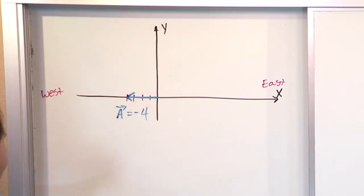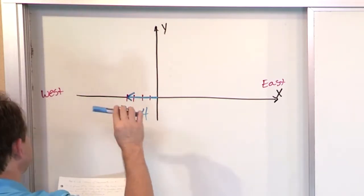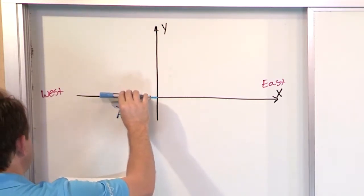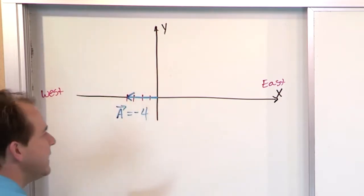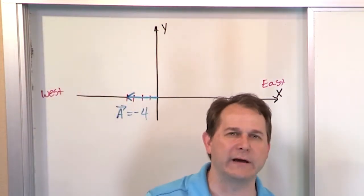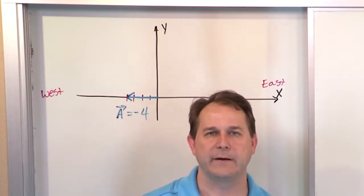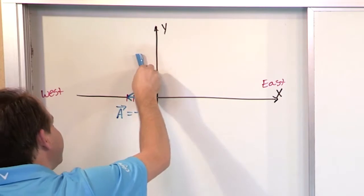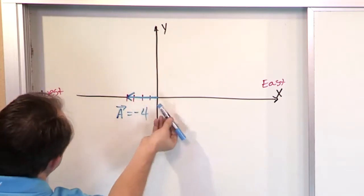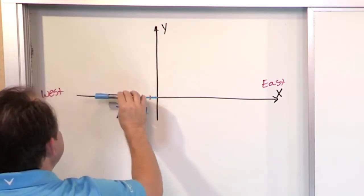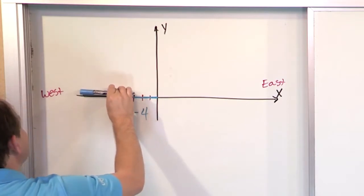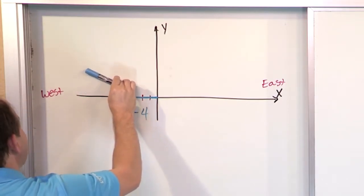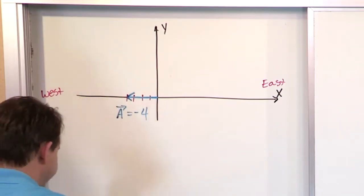Now, this is crucial that we read the next sentence properly. It says, then, he turns towards the north by 40 degrees. If you misinterpret what that angle is, you will get the wrong answer. It doesn't mean that he's 40 degrees from the x-axis. It doesn't mean he's 40 degrees from the north axis. It doesn't mean he's 40 degrees from the south axis.